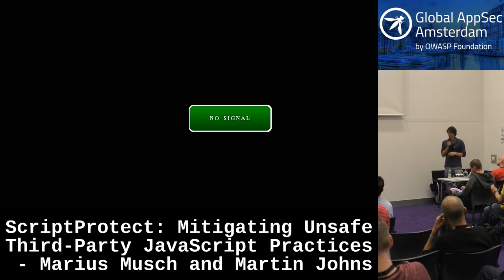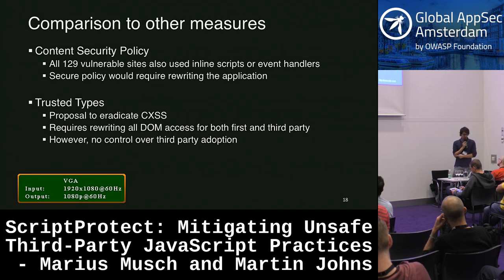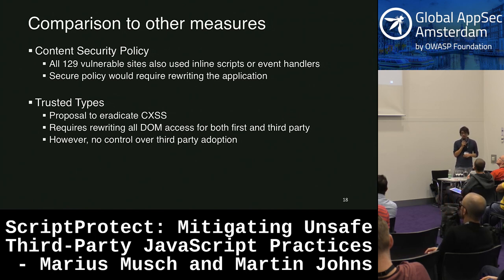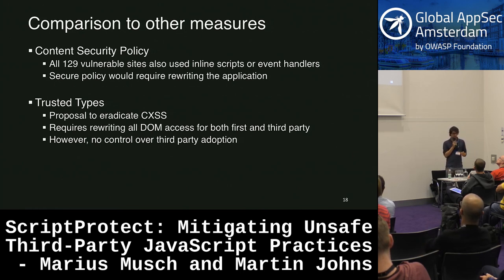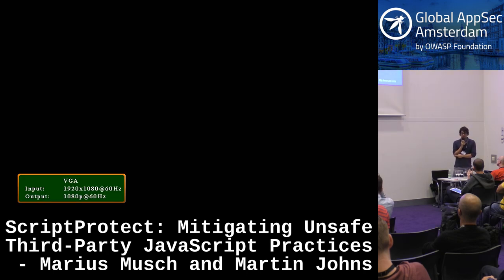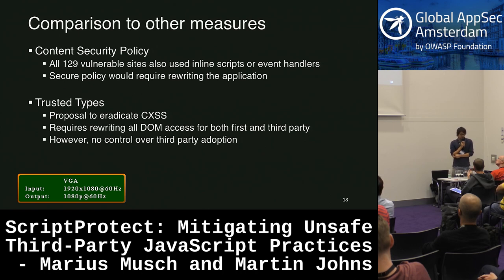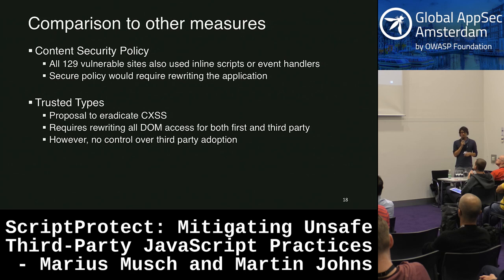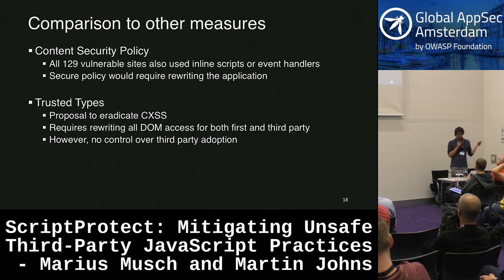For a quick comparison: you might know about content security policy. For the 129 vulnerable websites, we found that all of them used inline scripts or event handlers, so they had to deploy an insecure content security policy. If they want to use a secure policy, they would again need to rewrite the application — the very same thing we wanted to avoid as a requirement. Regarding Trusted Types — a proposal to eradicate client-side XSS — the problem is you don't have control over the third party, and if the third party doesn't use Trusted Types, you might run into a problem there.